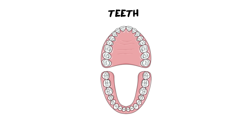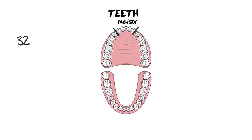Moving on to the structures associated with ingestion — starting with our teeth. We don't need to know a huge amount about teeth, but I'll cover the basics and key parts. In total you have 32 adult teeth; you may currently have 28 but will eventually grow wisdom teeth to reach 32. Starting with the types of teeth: your first four teeth are your incisors, which sit at the front of your mouth — those are your cutting teeth, the ones you bite into things with.